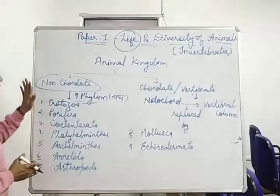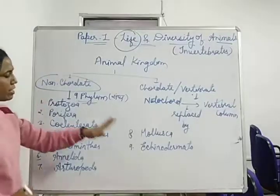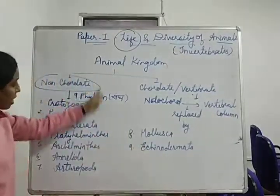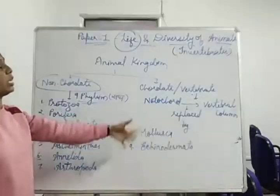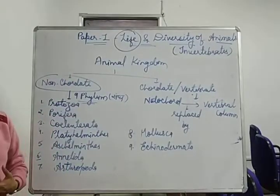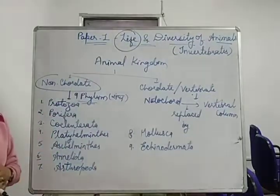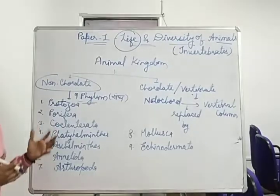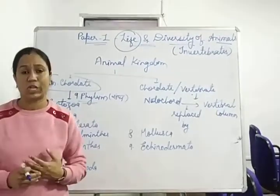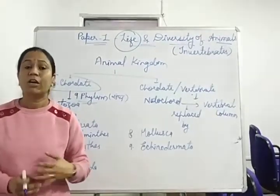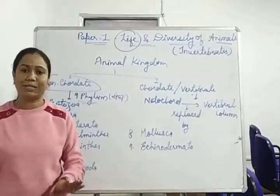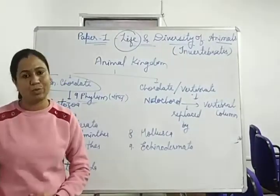So the animals become more complex. We start with Protozoa and end this paper with Echinodermata, studying all these phyla. I hope you will be able to understand this paper. Please read and understand. I have shared the notes with you. If you have any problems, you can discuss it in the group. Thank you so much.